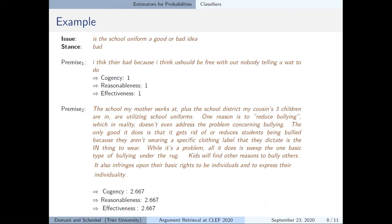Here you can see an example from this dataset. It comprises two premises towards the same issue: is the school uniform a good or bad idea, under stance bad. The values in the second example are higher for each dimension, mirroring that it is also more convincing for the three dimensions. Probably the sentence 'kids will find other reasons to bully others' increases the effectiveness, while the sentence 'it also infringes upon the basic rights to be individuals and to express their individuality' increases the cogency.